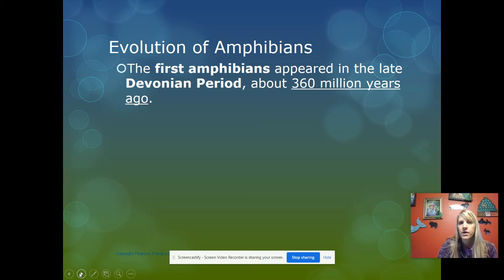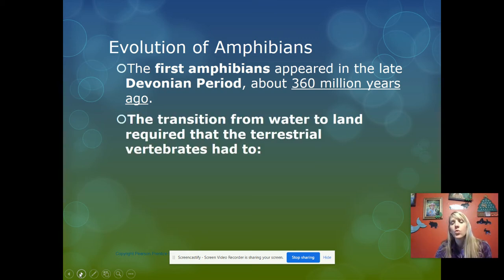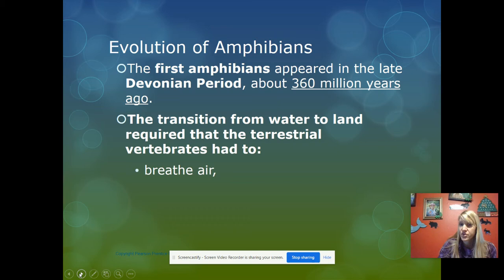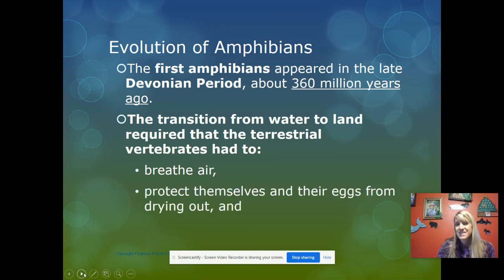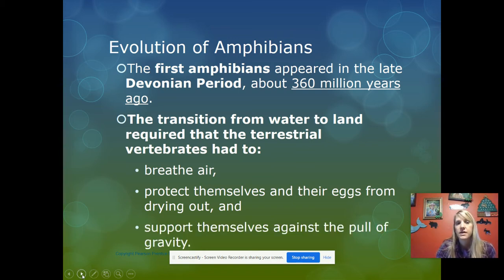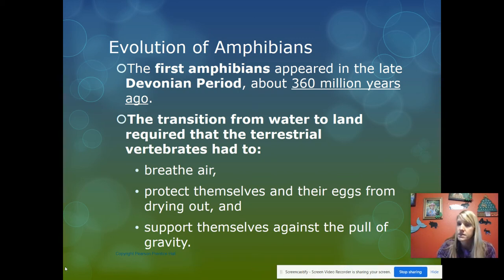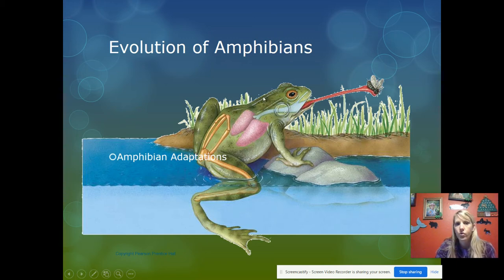The first amphibians appeared in the late Devonian period, about 360 million years ago. The transition from water to land required that vertebrates had to be able to breathe air, protect themselves and their eggs from drying out, and support themselves against the pull of gravity — since they no longer had the buoyancy of water.